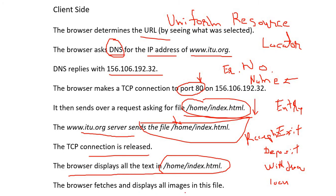Then the browser fetches and displays all images in the file one by one. With today's high-speed internet you don't notice this, but with slow speeds from many years ago, images, videos, and other elements were displayed one by one and it was visible. This procedure goes in sequence — that is everything that happens on the client side.